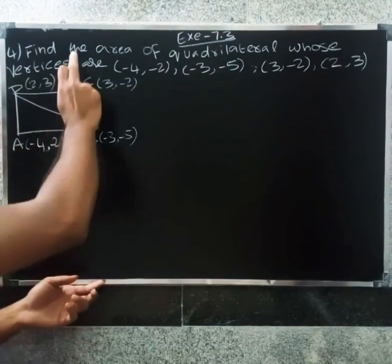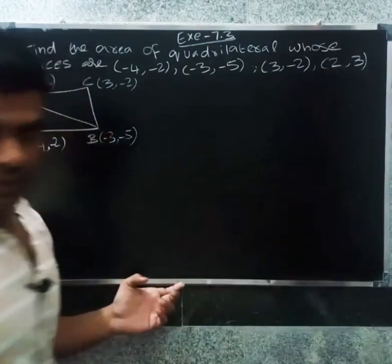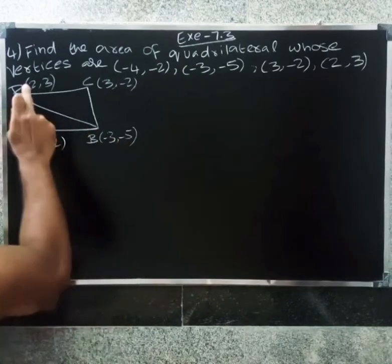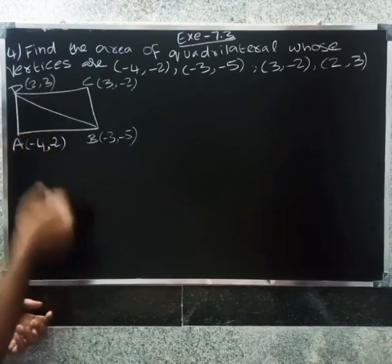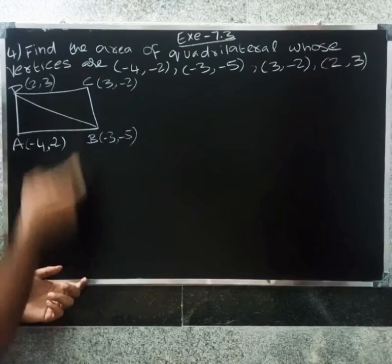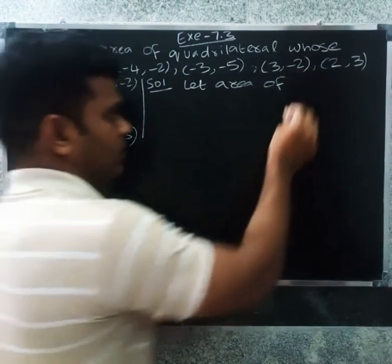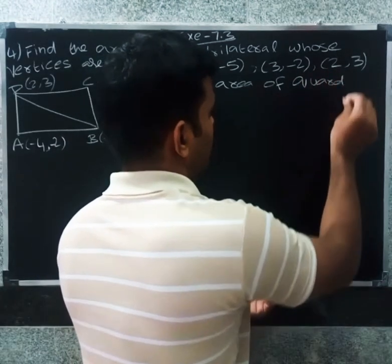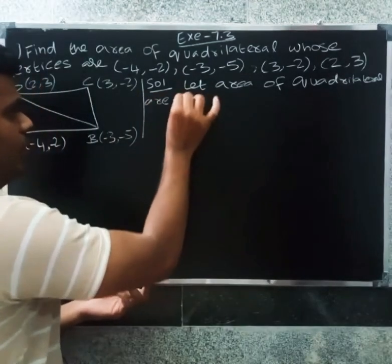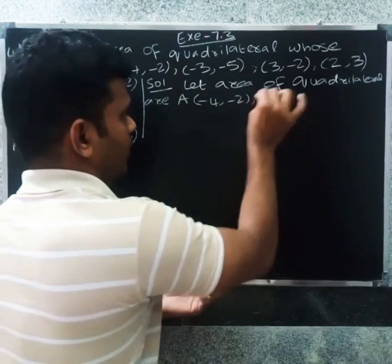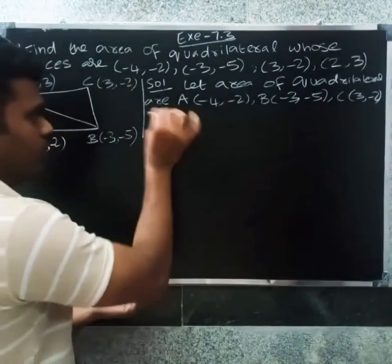Find the area of a quadrilateral whose vertices are A(-4, -2), B(-3, -5), C(3, -2), and D(2, 3). These are the four given points for the quadrilateral ABCD.